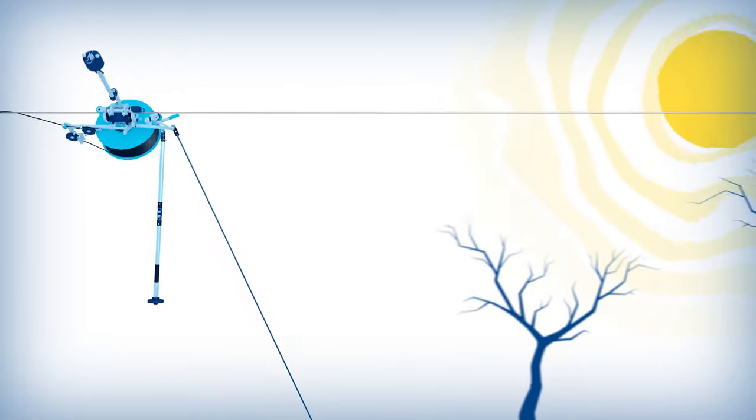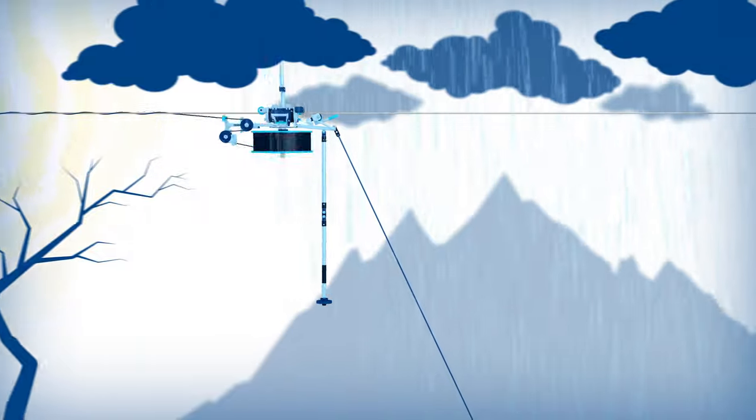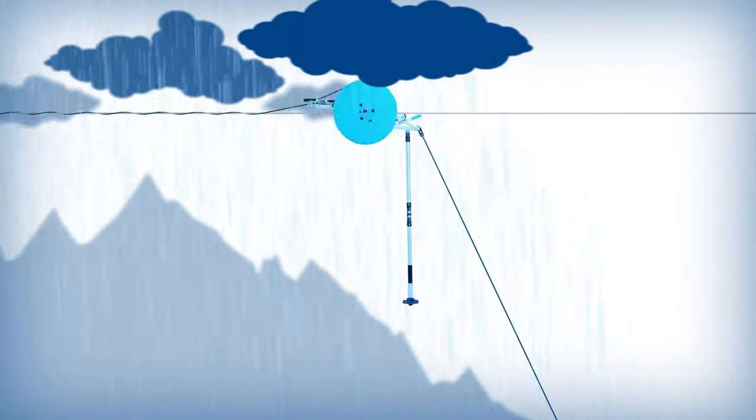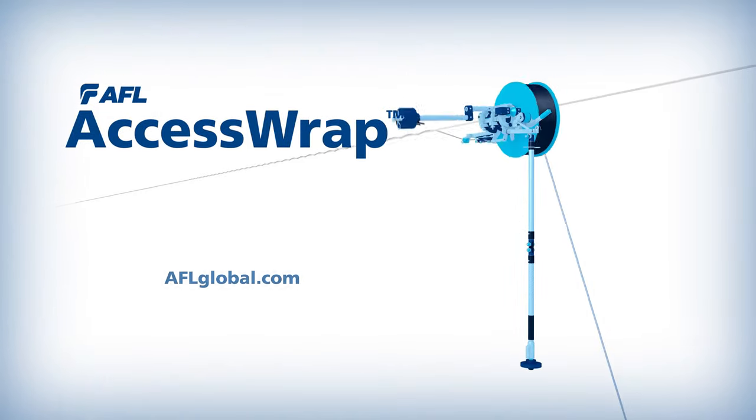AccessWrap is designed to withstand the harsh environmental conditions around the world and is the ideal solution for adding fiber to meet distribution level requirements. Visit AFL today to learn more.